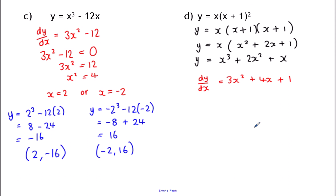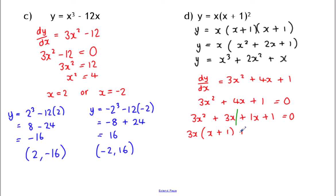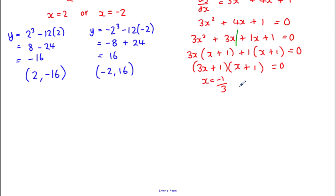To solve where that equals zero, because this is a full quadratic we're going to have to use the formula or factorise. This one factorises — we're looking for a pair of numbers that multiplies to make 3 and adds to make 4, so that's 3 and 1. Splitting the middle term: 3x² + 3x + x + 1. Factorising each side gives 3x(x + 1) + 1(x + 1) = 0, so (3x + 1)(x + 1) = 0. Solving each bracket: x = -1/3 and x = -1.